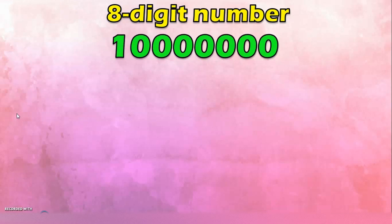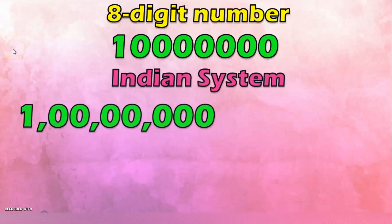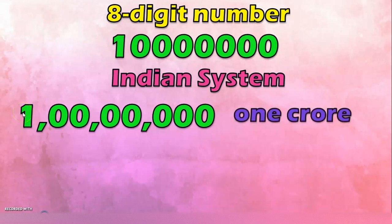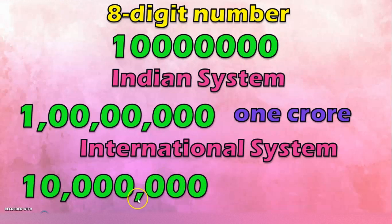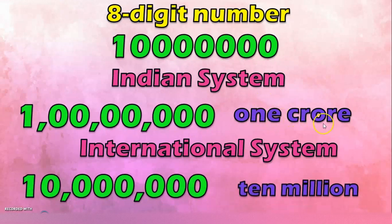Let us move on to an 8 digit number. In the Indian system, the place values are ones, tens, hundreds, comma, thousand, ten thousand, comma, lakh, ten lakh, comma, and the eighth place value is crore. So the number name for this 8 digit number in the Indian system is one crore. In the International system: ones, tens, hundreds, comma, thousands, ten thousands, hundred thousands, comma — the next place values are million and ten million. So the number name in the International system is ten million. One crore in the Indian system equals ten million in the International system.